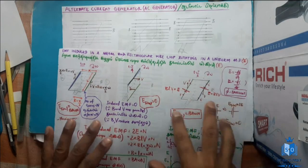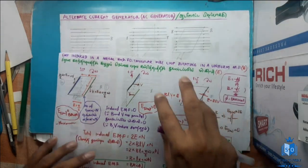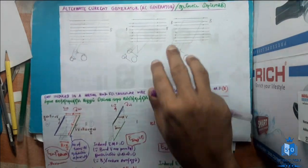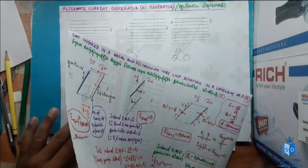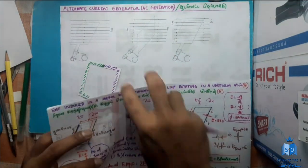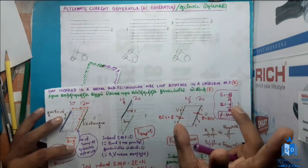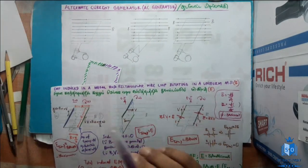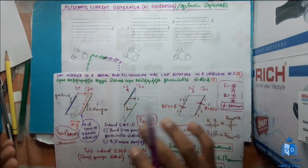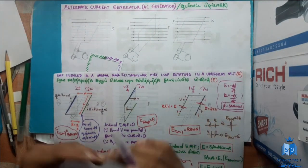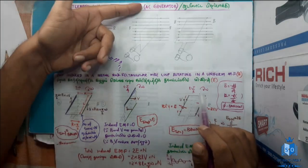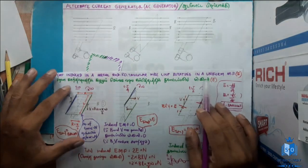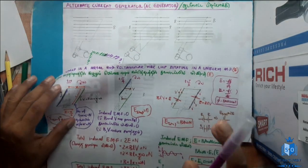So we are not going to derive the theory part. We are just going to analyze the setup — how this works, what these parts are, and how they function. And after the AC generator, we will be discussing the DC generator as well.